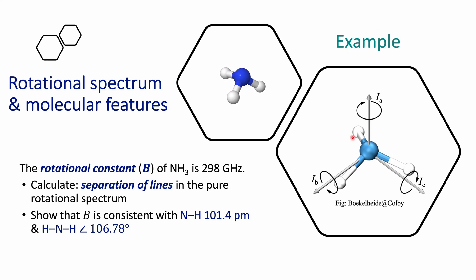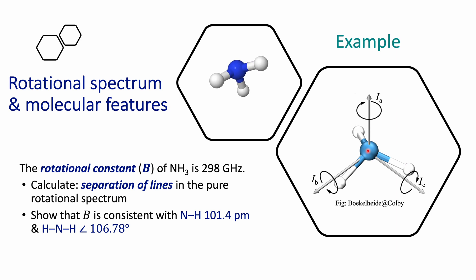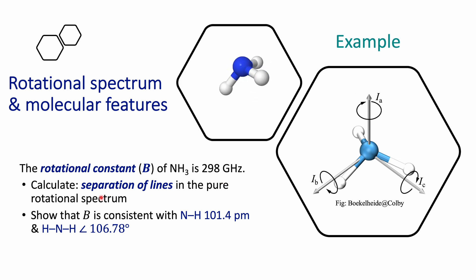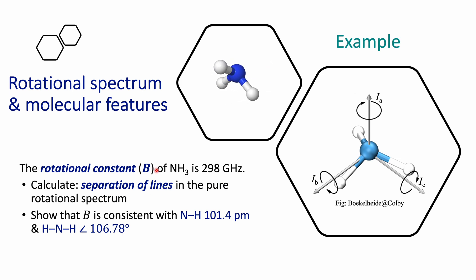In this example, we're going to be looking at how to relate molecular features such as bond lengths and bond angles with some characteristics of the pure rotational spectrum. For example, the separation between lines that we know are related to the rotational constant of my molecule. For this case, we're going to use ammonia.